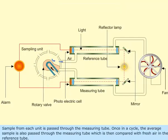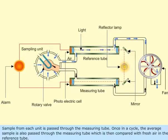Sample from each unit is passed through the measuring tube. Once in a cycle, the average sample is also passed through the measuring tube, which is then compared with fresh air in the reference tube.